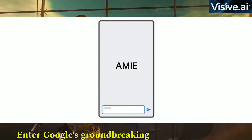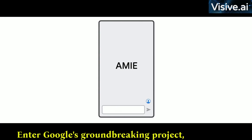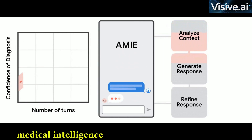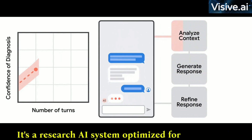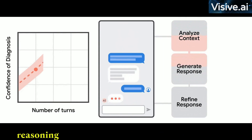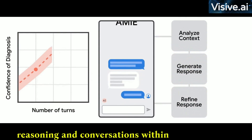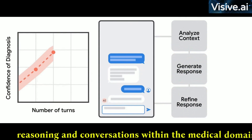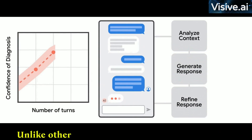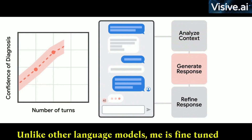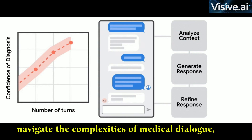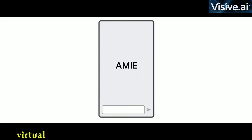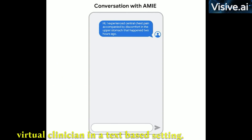Enter Google's groundbreaking project, the Articulate Medical Intelligence Explorer, or AMIE. It's a research AI system optimized for diagnostic reasoning and conversations within the medical domain. Unlike other language models, AMIE is fine-tuned to navigate the complexities of medical dialogue, acting like a virtual clinician in a text-based setting.